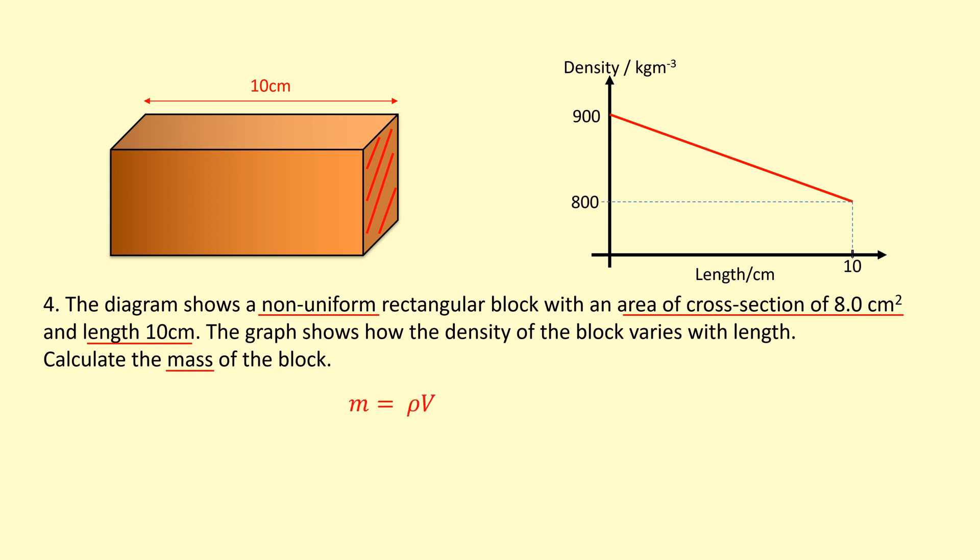I'm going to use this equation for mass, density, and volume here. The volume is going to equal the cross-section area times the length. So I know the length is 10 centimeters, I'm going to have to turn that into meters, and the area is 8 centimeters squared. I'll turn that into meters squared in a second. But what density do I use?